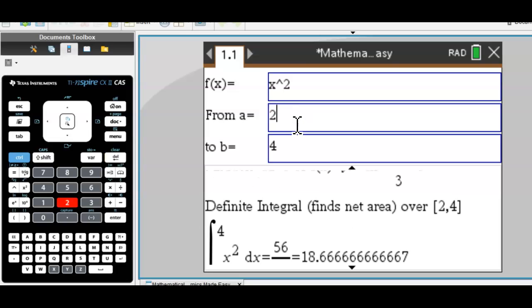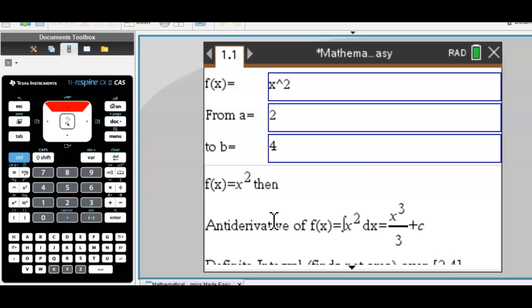You need to find a definite integral of x squared between 2 and 4. So you first find the antiderivative, which would be x cubed over 3 plus c.